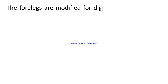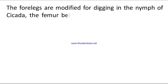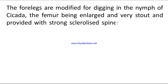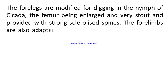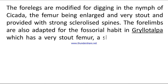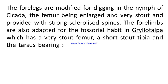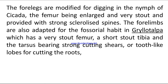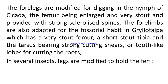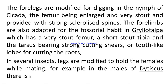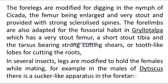The fore limbs are modified for digging — the femur being enlarged, very stout, and provided with strong sclerotized spines. The fore limbs are also adapted for the fossorial habit in Gryllotalpa, which has a very stout femur, a short stout tibia, and a tarsus bearing strong cutting shears or tooth-like lobes for cutting roots. In several insects, legs are modified to hold females while mating; for example, in male Dytiscus, there is a sucker-like apparatus in the fore tarsus.